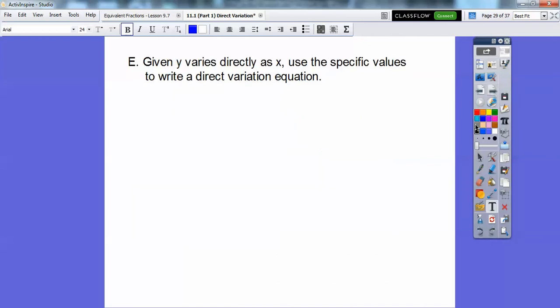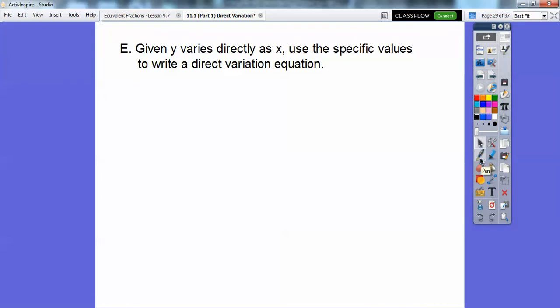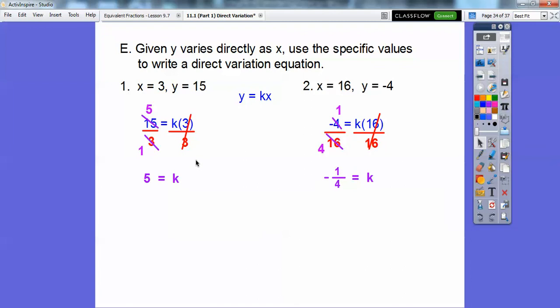So given y varies directly as x, use the specific values to write a direct variation equation. So if y varies directly as x, we have these two ordered pairs. This is 3, 15, and this is 16, negative 4. So just think of what we did on that last one where we saw the graph, and it went through the points. Well, this one's going through 3, 15. This one's going through 16, negative 4. y equals kx, so let's just plug in the 15 for y and the 3 for x. Over here, we're going to plug in the negative 4 for y and the 16 for x. So I'm doing them both at once right there. And then just divide out by this one. We're going to divide by 3, and this one we're going to divide by 16. And so when we do that, I get 5 on this one. k equals 5.